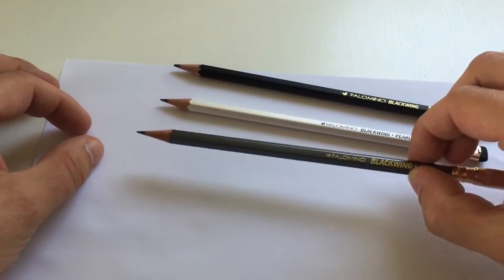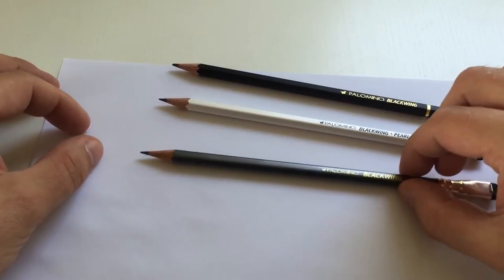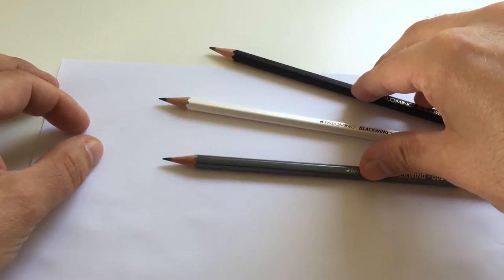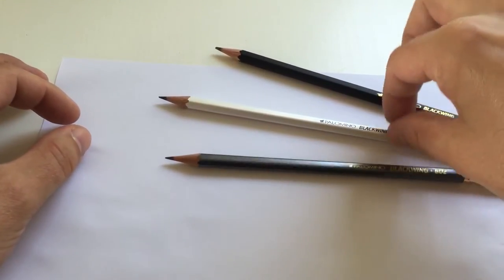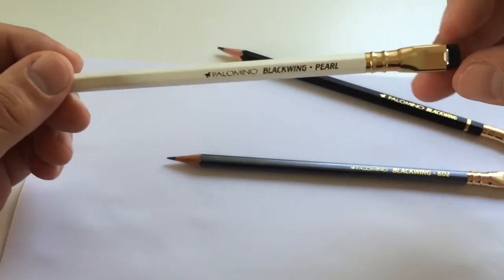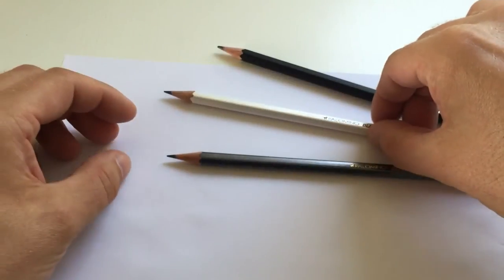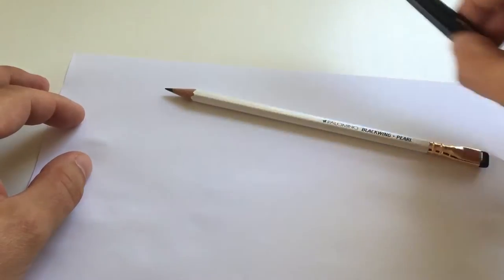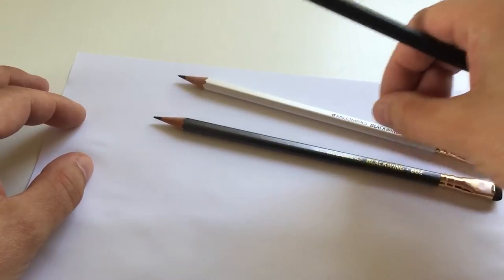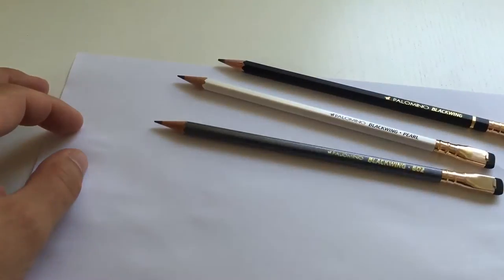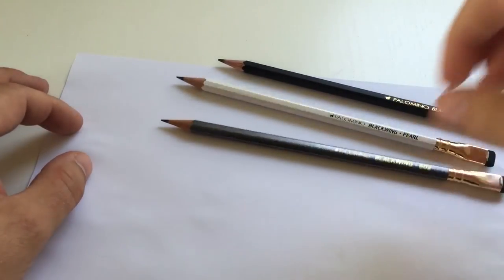For me personally, what I would do is I would probably get a 602 for writing and I would get that one here for drawing if I would want to get both of them. But since they're quite expensive, you could also just get the Pearl and then you would probably be good with having a quite nice all-rounder pencil. Because I don't do so much drawing and sketching, I would probably be fine with the 602.